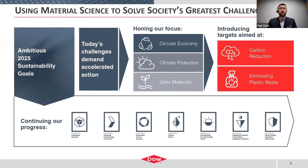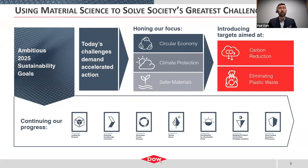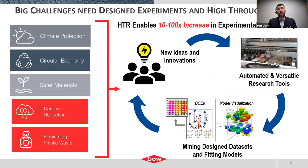Our globe is facing challenges today that we've never before encountered. Many of those key emphasis items are around sustainability — how do we deliver great innovative science while simultaneously protecting our planet for future generations? Dow has established a variety of sustainability goals aligned to circular economy, protecting the planet, designing safer materials, carbon reduction, and eliminating plastic waste — not eliminating plastics, but eliminating plastic waste. These are big challenges that we have to make sure we're accelerating in. That is really where high throughput can bring a lot of power to bear.